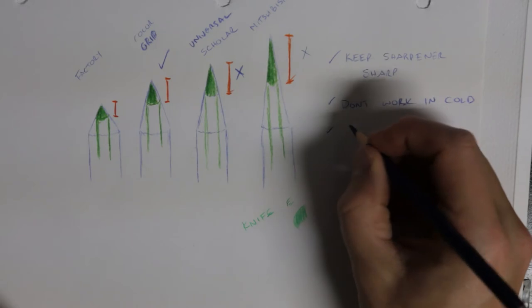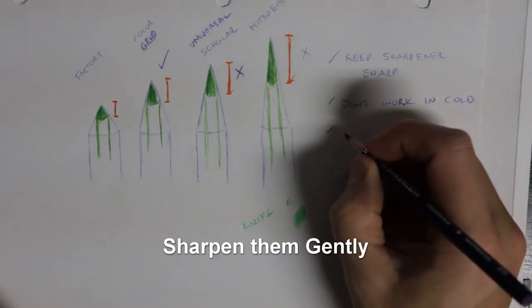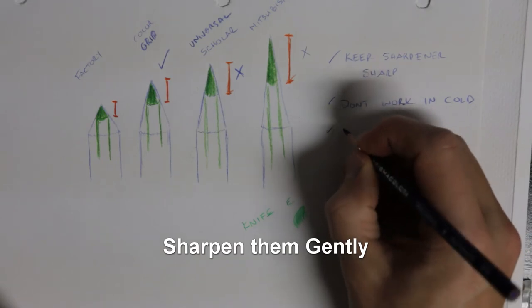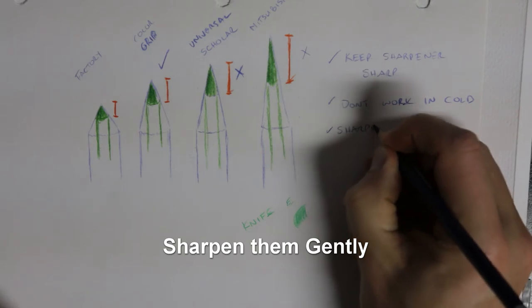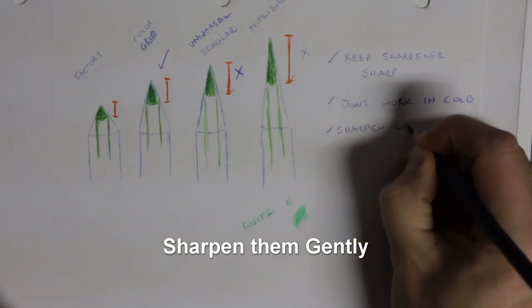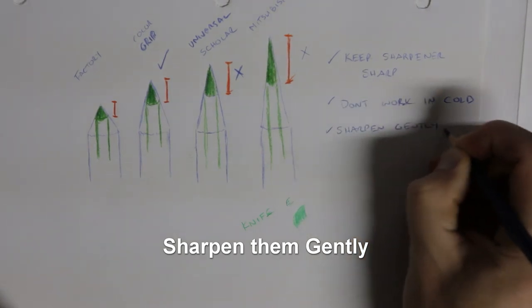When you're sharpening them, sharpen them gently. Take your time especially when you're just about to start sharpening the pencil. Also be careful when you're removing the pencil from the sharpener because this is a time where you can accidentally break the tip off.